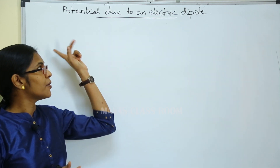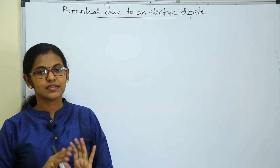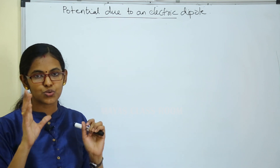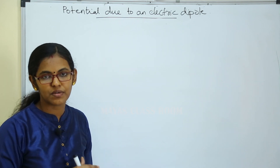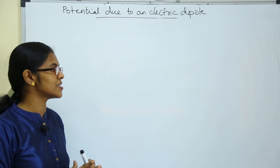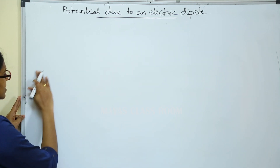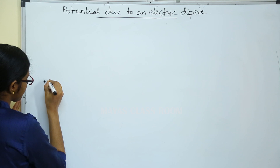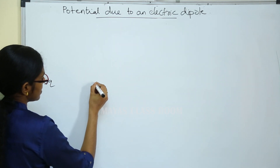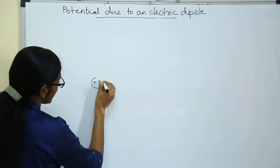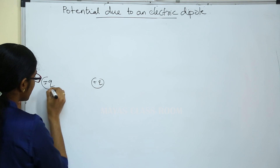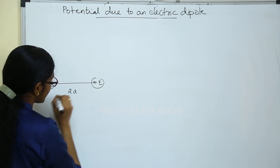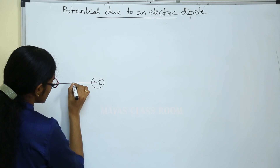We will see the Potential due to an Electric Dipole. We consider plus q and minus q charges. In the chart, we consider this electric dipole with separation 2a. This is the central portion.